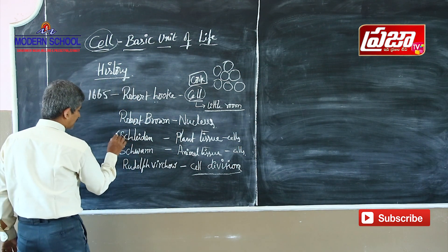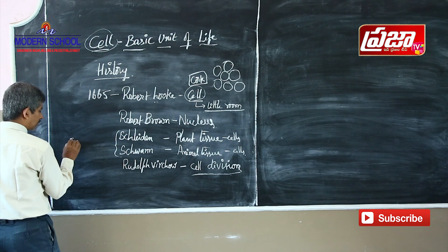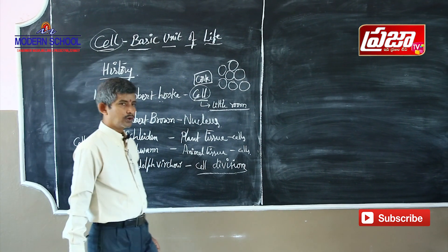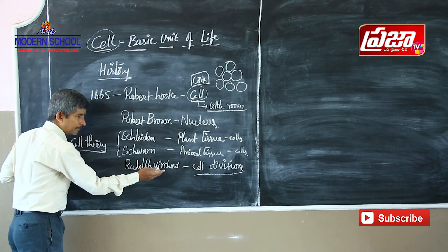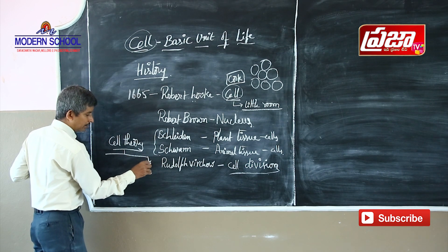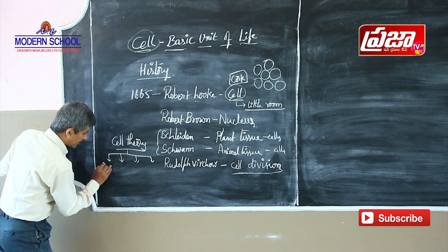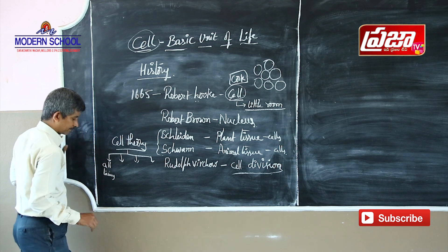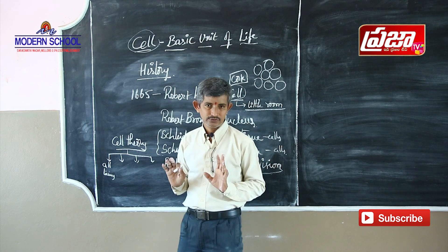In 1835, two scientists — Schleiden and Schwann — together proposed the cell theory. They incorporated Rudolf Virchow's statement and proposed the cell theory with four main basic points. The first point: all living organisms are made up of cells.